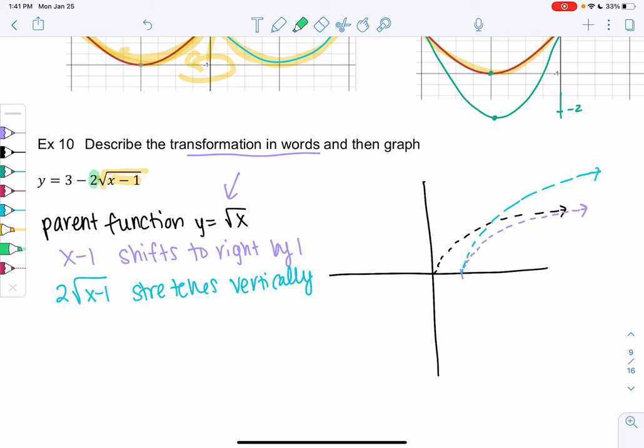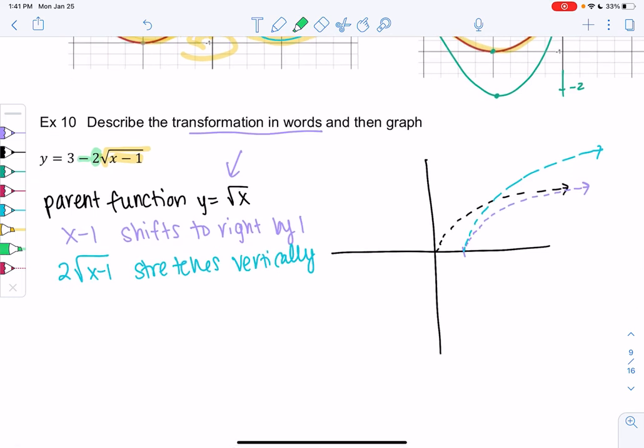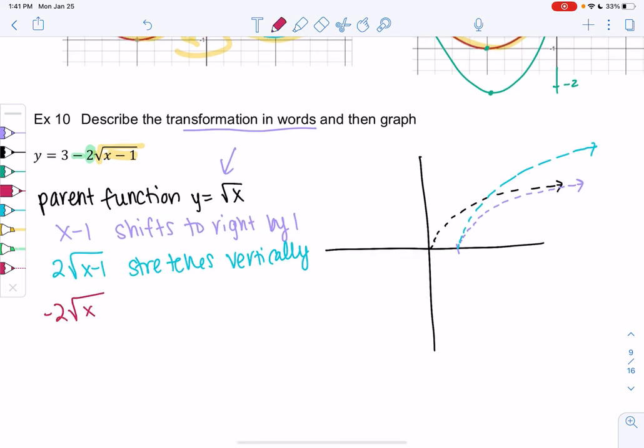And then we see the negative sign out front. So what do negative signs on the outside do? And so that'll be a reflection about the x-axis. All right, it flips upside down. So basically negatives on the inside go sideways. Negatives on the outside go upside down. So we're going to take that blue curve and just reflect it upside down.